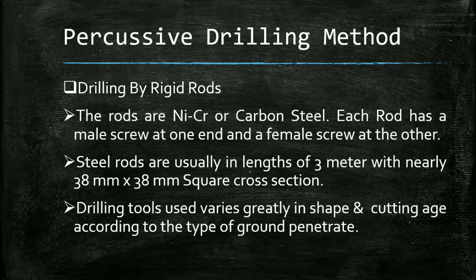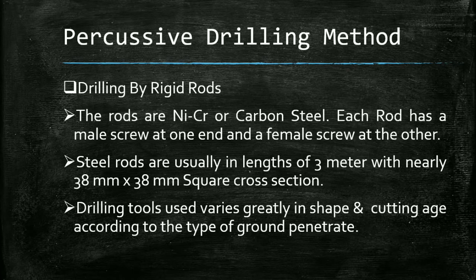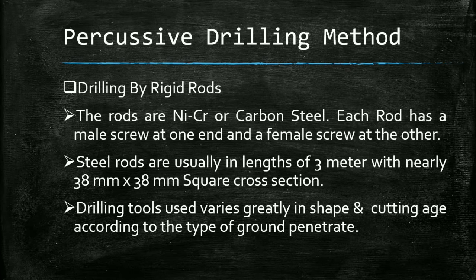The first method of percussive drilling is drilling by rigid rods. The rods are formed by nickel-chromium or carbon steels. Each rod has a male screw at one end and a female screw at the other. The steel rods are usually 3 meters in length with a nearly 38 mm square cross section. The drilling tools used vary greatly in shape and cutting edge according to the type of ground being penetrated.